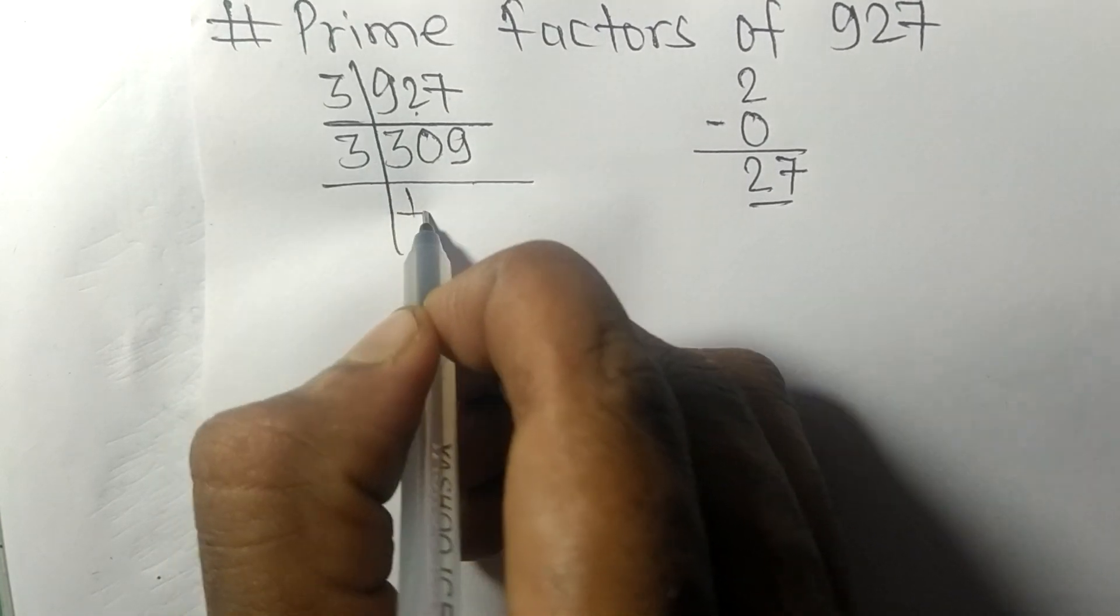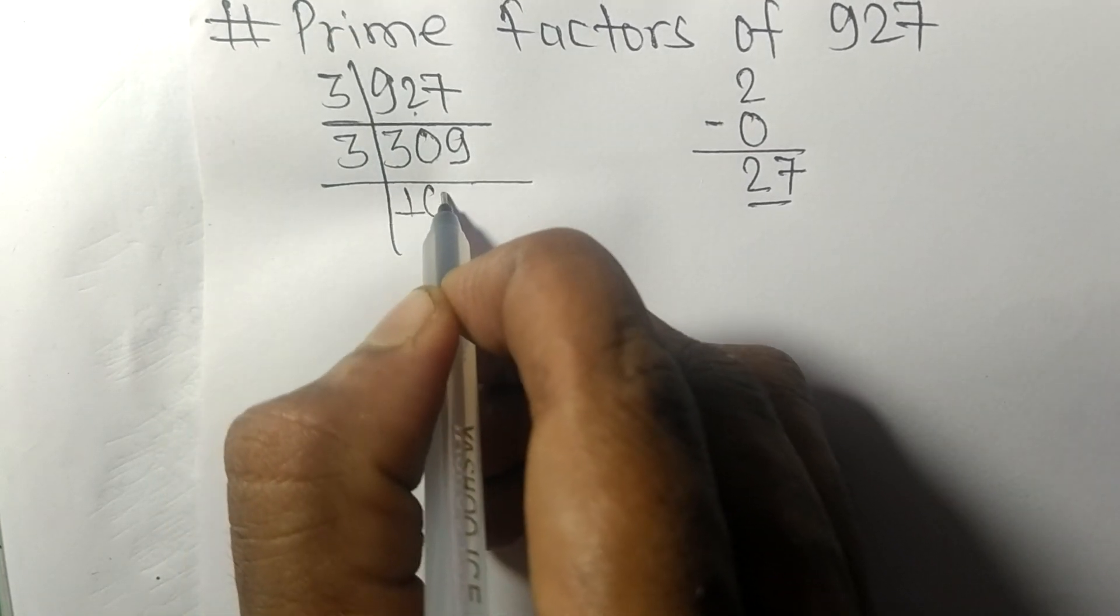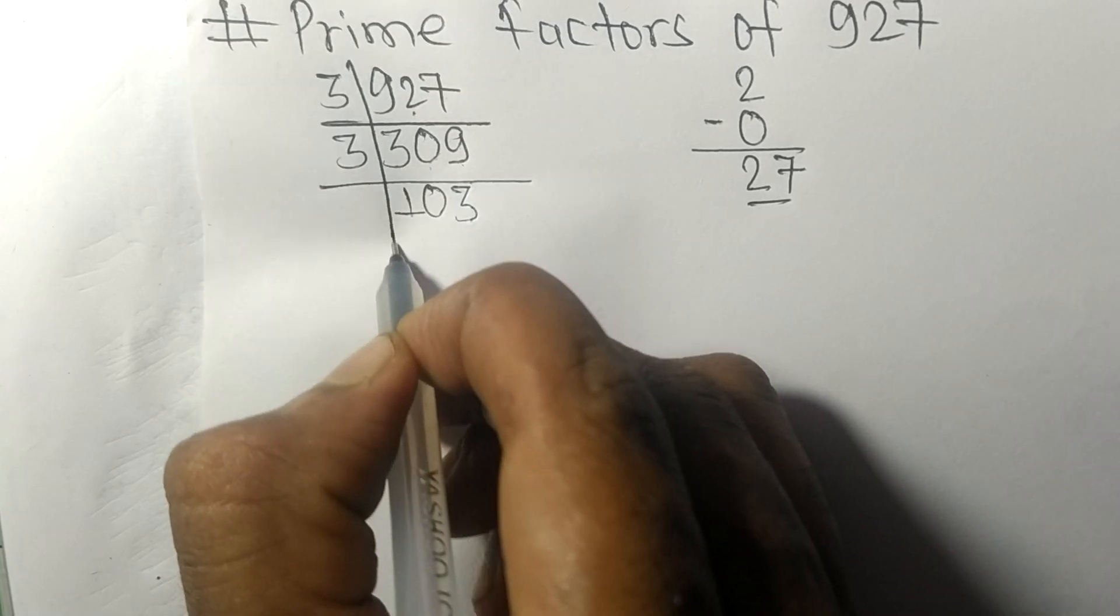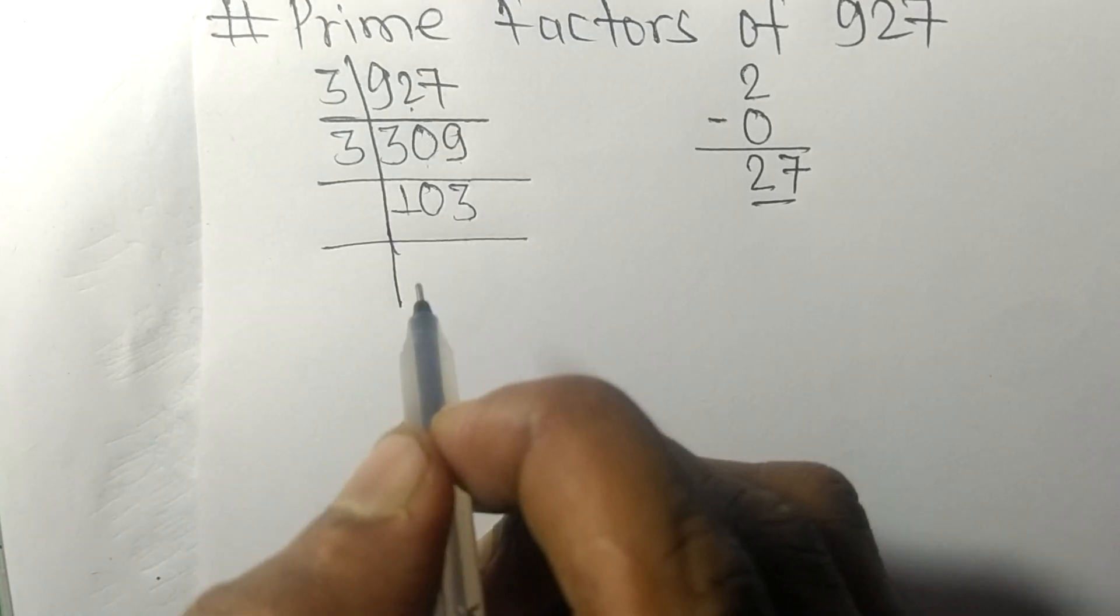3 times 1 means 3, 3 times 0 means 0, 3 times 3 means 9. So now we got 103,